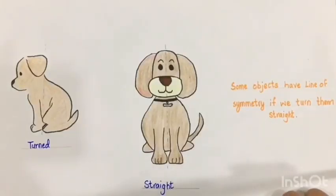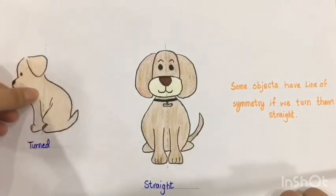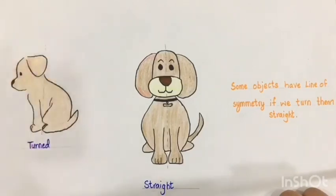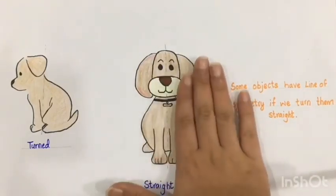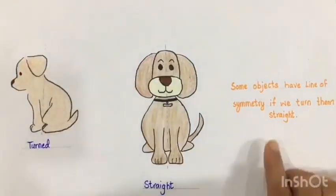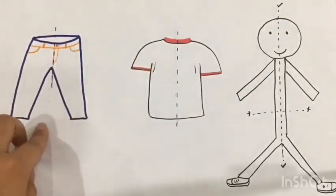Sometimes some objects have a line of symmetry if we turn them straight. Look at this puppy — it is sitting turned away, and if I made a line like this, it is not a line of symmetry because this part is not matching this part. But if I made a picture like this and I place a line of symmetry in the center, this part is now exactly matching this part. So sometimes if we turn the object straight, we can find the line of symmetry.